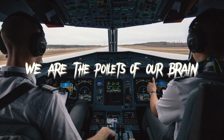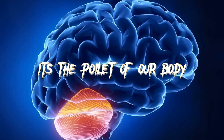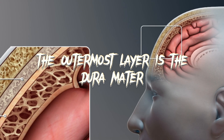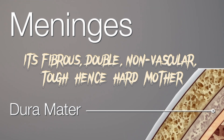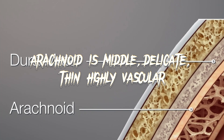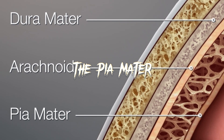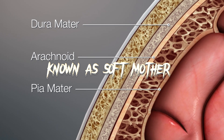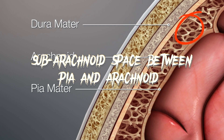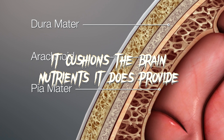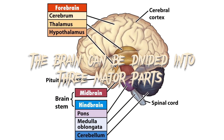The brain is the pilot of the body, protected by the skull and covered by cranial meninges. The outermost layer is the dura mater — fibrous, avascular, the tough hard mother. The arachnoid is the middle layer — delicate and thin. The innermost layer, the pia mater, is in indirect contact with the brain. The subarachnoid space between the pia and arachnoid contains cerebrospinal fluid, which cushions the brain and provides nutrients.